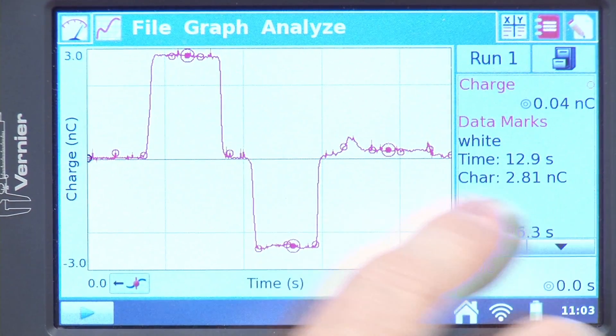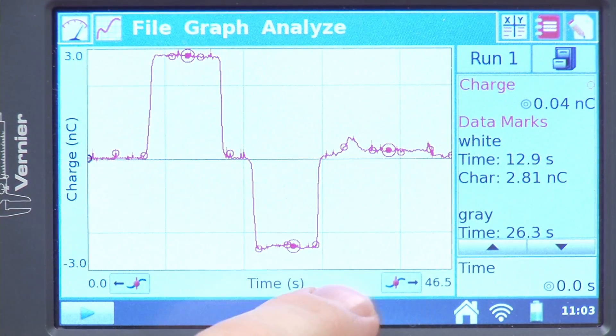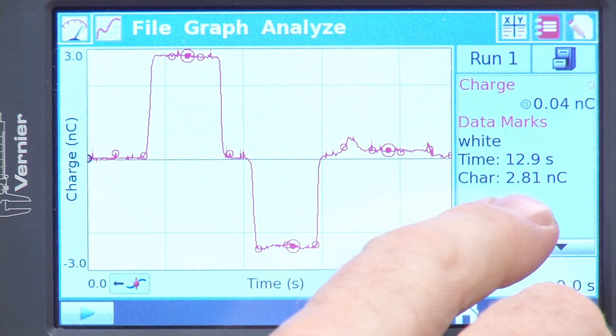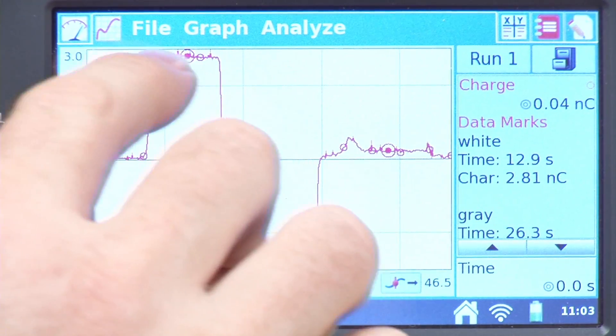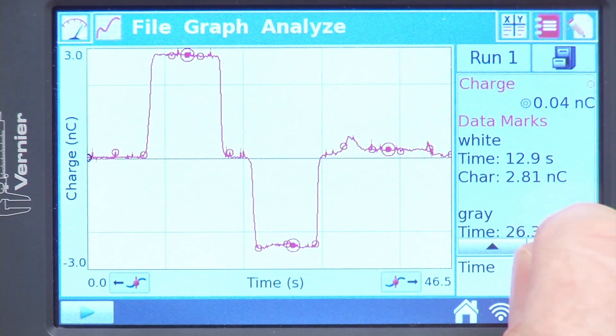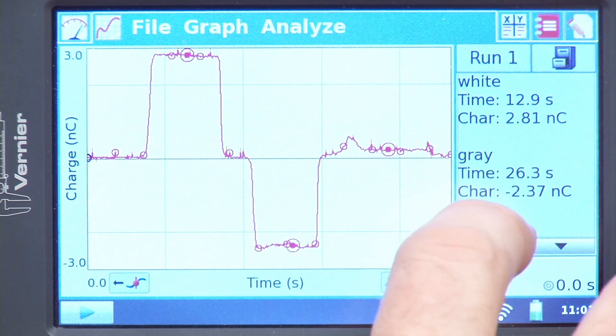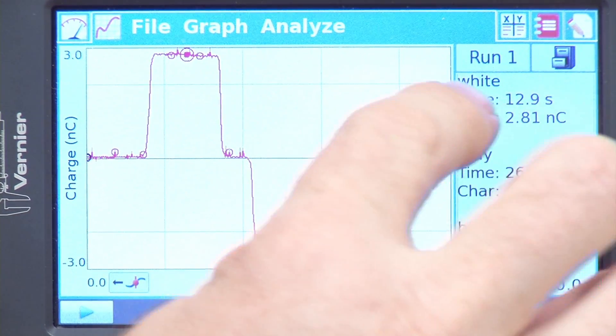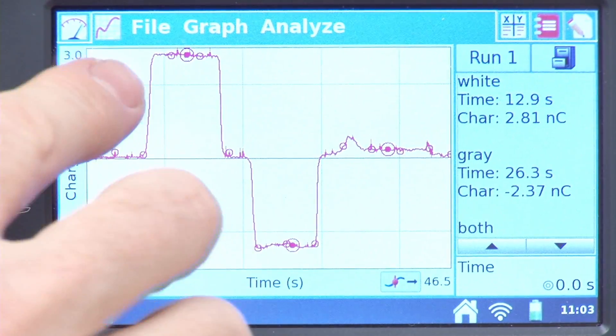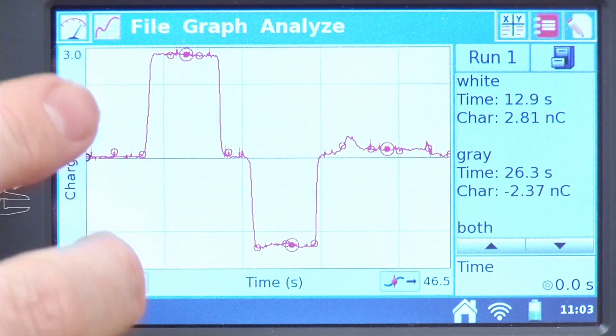So let's take a look at some of the values there. And if I see there that I've got a charge, the white one, 2.81 nanocoulombs for that particular point. I'll scale down here. I get negative 2.37. It's within the same range, so I would hope that they would be equal and opposite.